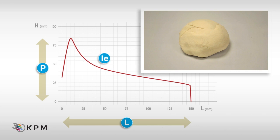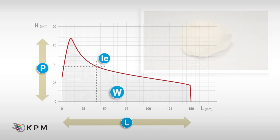IE value corresponds to the elasticity index. And finally, the W value indicates dough baking strength.